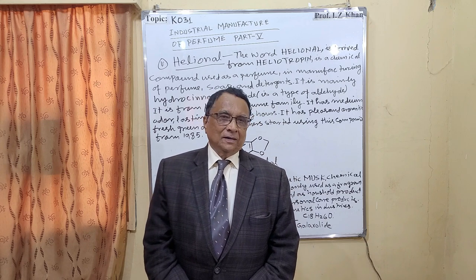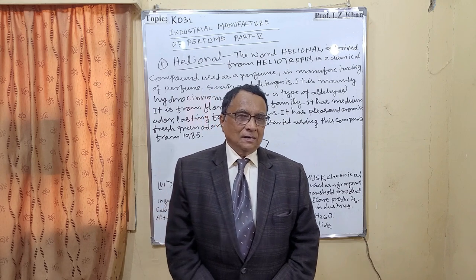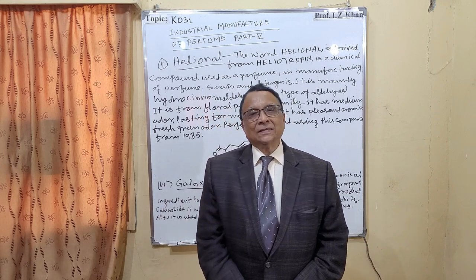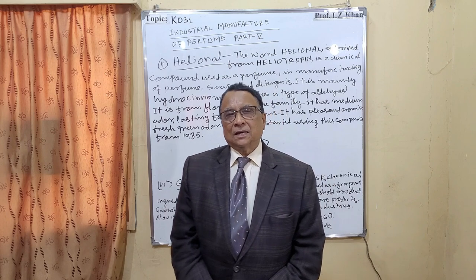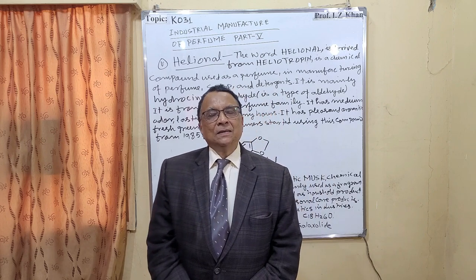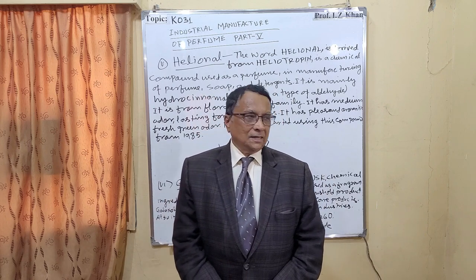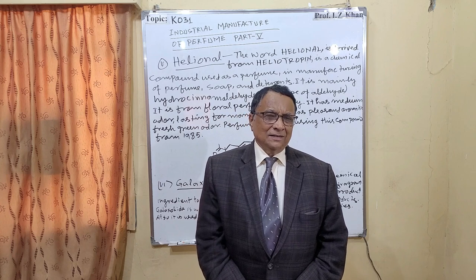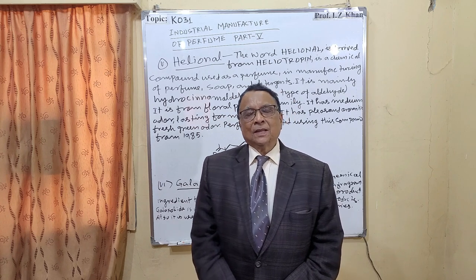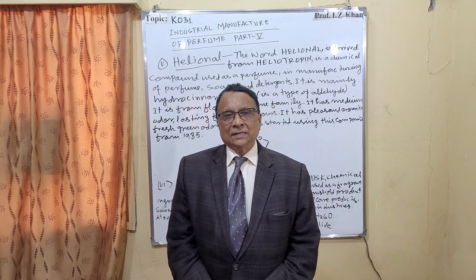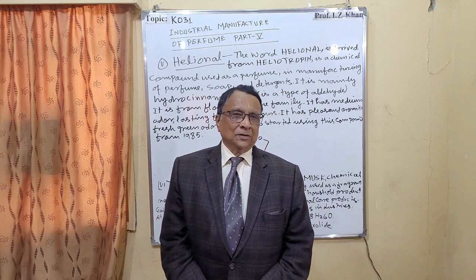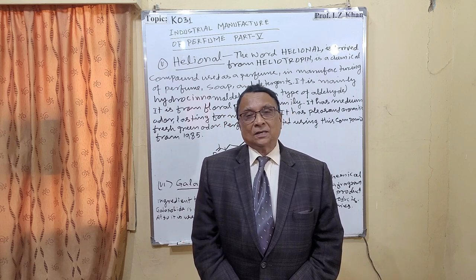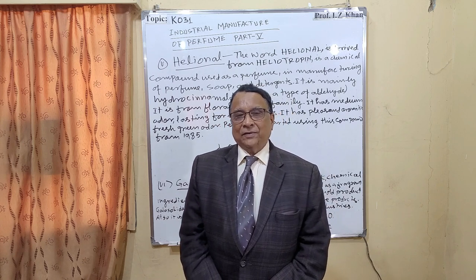The fifth compound is helional, which is isolated from the heliotrope plant — a herb with light blue and pink colored flowers. It is dried and widely used in the perfume industry, giving a very good fragrance.